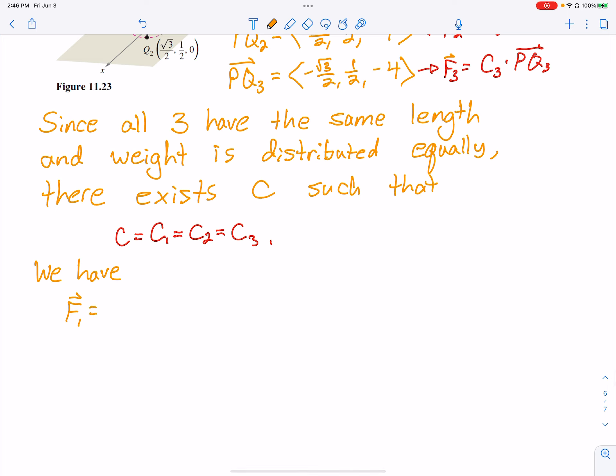The force 1 vector is going to be C times <0, -1, -4>. F2 is that same C times <√3/2, 1/2, -4>.